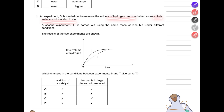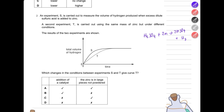Next question: dilute sulfuric acid is added to zinc — H₂SO₄ + Zn → ZnSO₄ + H₂ — and the volume of hydrogen gas is measured. A second experiment uses the same mass of zinc under different conditions, giving a lower rate (curve T). What change in condition could produce curve T? A catalyst was not added because the rate became slower. The zinc must be in large pieces rather than powdered — larger pieces mean smaller surface area, which gives a lower rate. The answer is C.